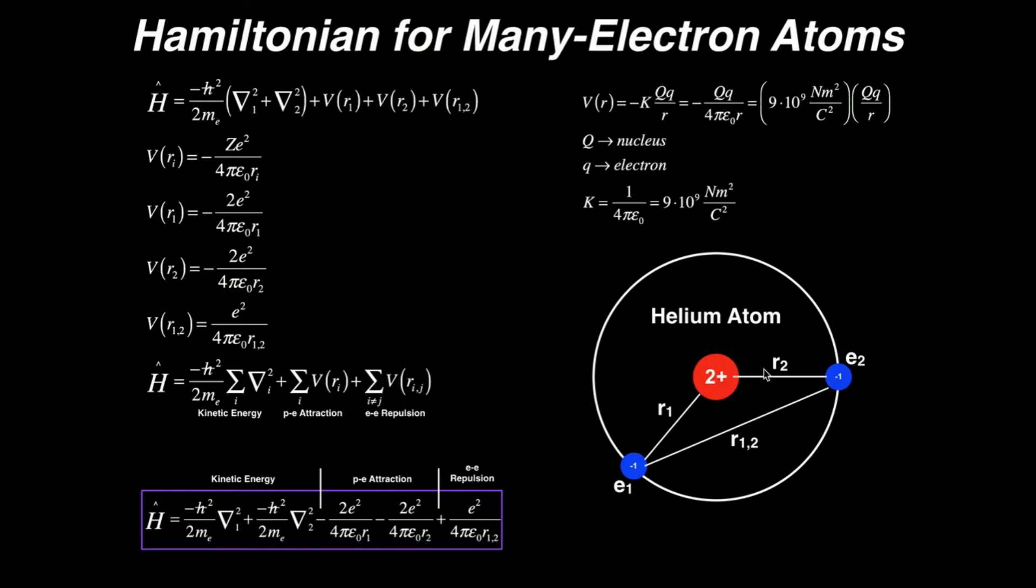And then if you want to talk about the distance between electrons, you put R and the two subscripts that correspond to each electron. So their distance is R12. If we were dealing with lithium, which we'll do in the next video, and we had a third electron, we could have R13, we could have R23, and then we would still have an R12. So you can see that with every electron that's added, you get increasingly complicated in your Hamiltonian.